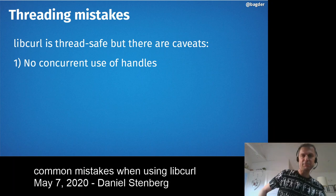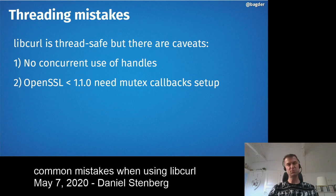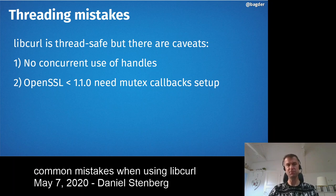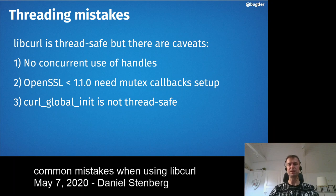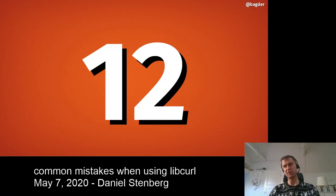Mistake number eleven: threading mistakes. curl_global_init isn't thread-safe, but there are other threading caveats too. There's no locking in libcurl — you can't concurrently use the same handle from multiple threads. Before OpenSSL 1.1.0, you needed to set up mutex callbacks with OpenSSL itself, otherwise OpenSSL would crash. So if you use an older OpenSSL, you need mutex callbacks — better to just upgrade. The basic rules: call global_init from one thread only, don't share handles across threads, and use OpenSSL 1.1.0 or newer.